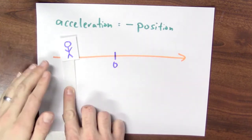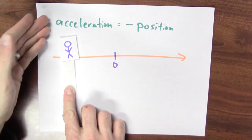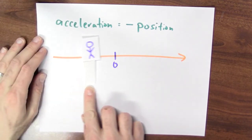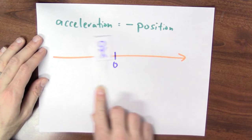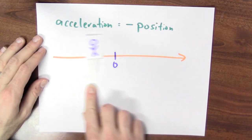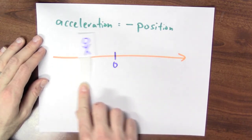And then as I swing past towards 0, now my position is negative, so my acceleration is positive, so I'm being pulled back in the other direction. And that's kind of producing this swinging back and forth across 0.